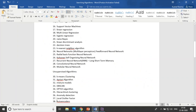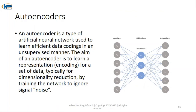The thirty-eighth algorithm is autoencoders, which come under neural networks but work for unsupervised learning. An autoencoder is used to learn efficient data codings in an unsupervised manner. The aim is to learn a representation for a set of data — typically for dimensionality reduction — by training the network to ignore signal noise. While we saw LDA for dimensionality reduction in supervised learning, here we have autoencoders for unsupervised dimensionality reduction.